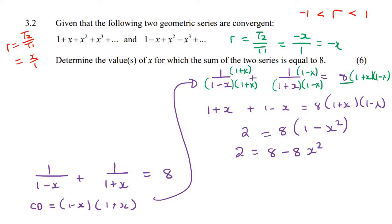And so now we end up with 2 equals to 8 minus 8x squared. And I'm going to take the 8x squared to the left, and I'm going to bring the numbers over to the right. And so 8x squared is 6. Divide by 8. So that's 6 over 8. So that means that x squared is 3 over 4. And so if you had to square root, we should say plus minus. Remember, you always say plus minus when you square root. And that's going to be square root 3 over 2.